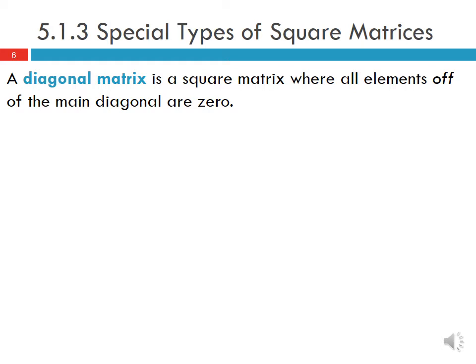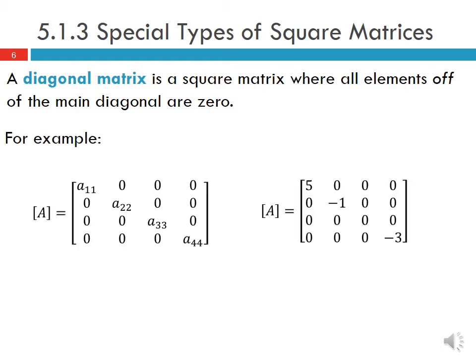A diagonal matrix is a square matrix where all elements off the main diagonal are zero. For example, in a 4 by 4 matrix we may have nonzero values A11, A22, A33, A44, while all off-diagonal values are zero. The diagonal values themselves can be zero or nonzero. The identity matrix is an example of a diagonal matrix.